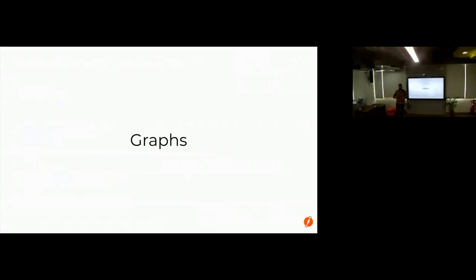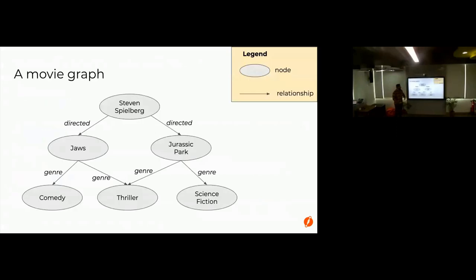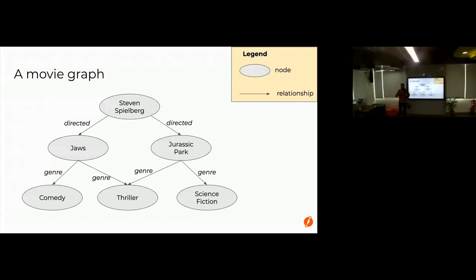Let's talk about graphs. This is an example of a graph — it's a dataset we use for many examples, about 21 nodes talking about movies, directors, and things like that. What we have are nodes and relationships. Steven Spielberg is a node, an entity. Jaws is also an entity. The fact that Steven Spielberg directed Jaws is represented with a relationship called 'directed'. That's everything you have in a graph — nodes and relationships.